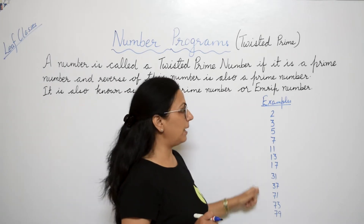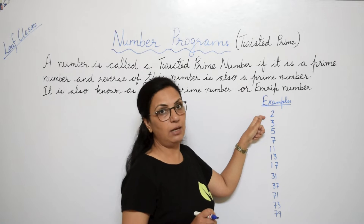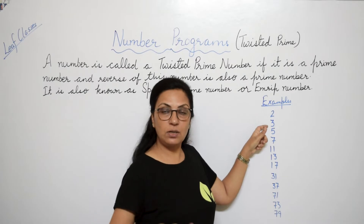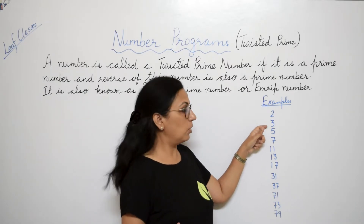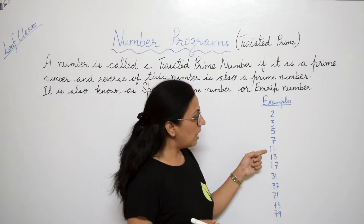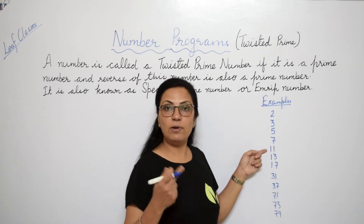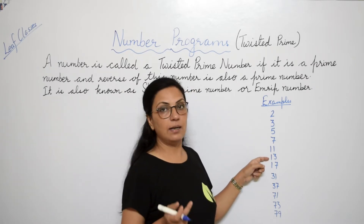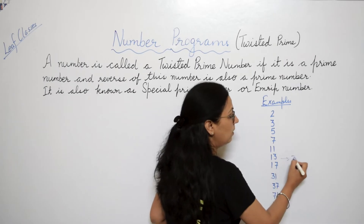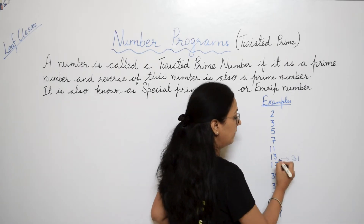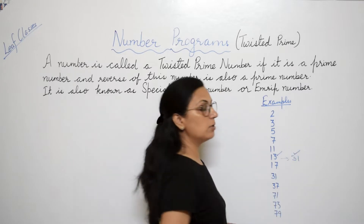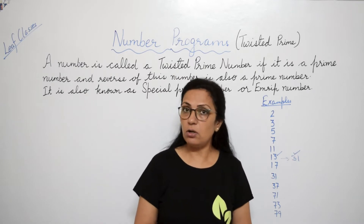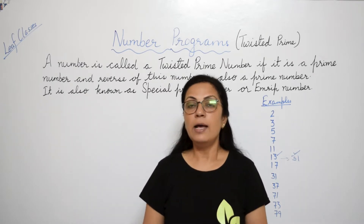Here I have written a few examples of twisted prime. 2 — as you know, this is the only even number that is prime. 3 — reverse of 3 is 3, and 3 is prime, so it is twisted prime. Coming to two-digit numbers: 11 — reverse of 11 is 11, which is prime. 13 — reverse of 13 is 31, and 13 is prime and 31 is also prime, so 13 is a twisted prime number.